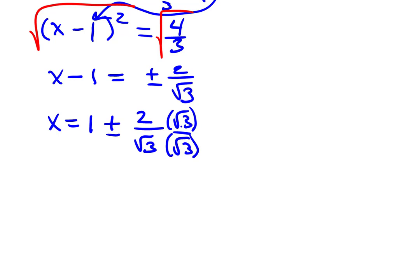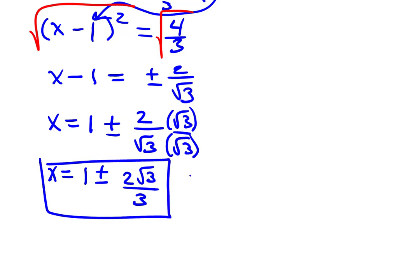This gives us a result of x = 1 ± 2√3/3. √3 times √3 is 3. So you could stop here, or sometimes, depending on the textbook author, they will actually go further and get a common denominator calling this (3 ± 2√3)/3. But either one should be acceptable.